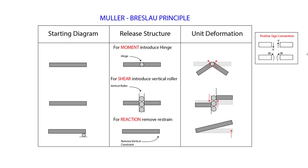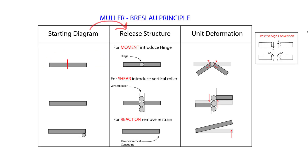First we look at our starting diagram, our initial condition. The first thing we're going to look at is finding the influence line at the middle of the beam — that's our starting diagram. Then we move on to the next step, which is to release the structure. For a moment, let's say we're asked to find the moment at the center of the beam — we are going to introduce a hinge.